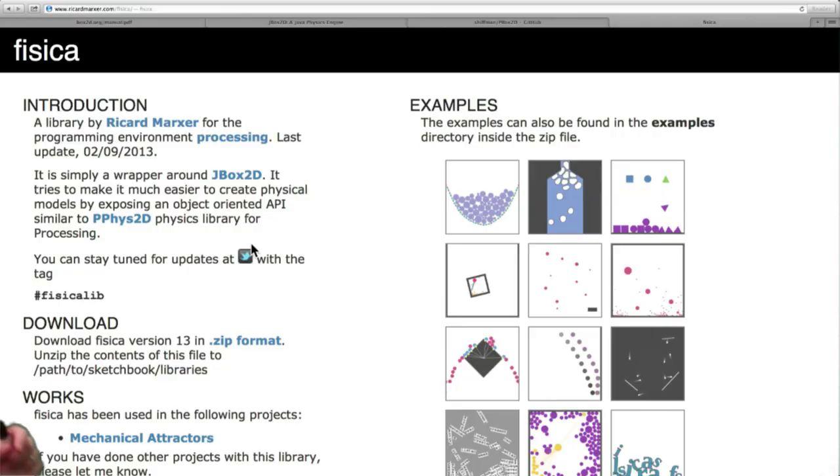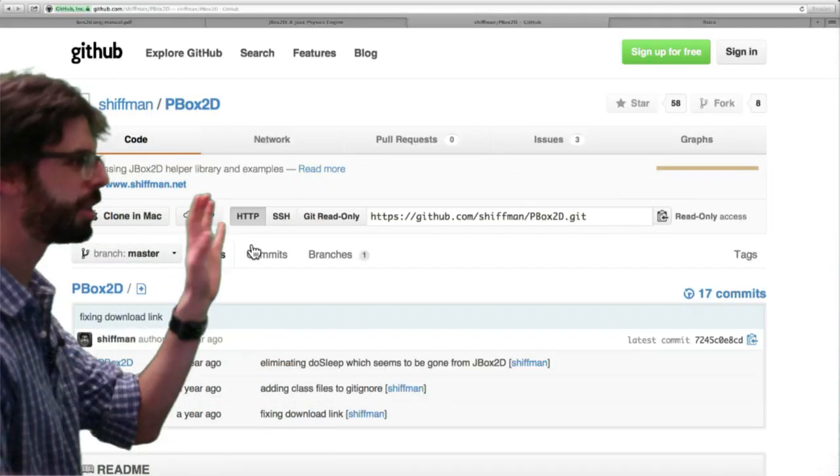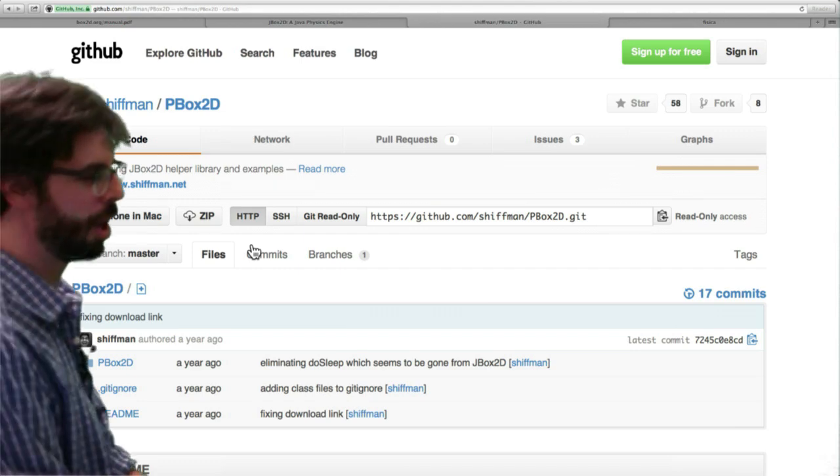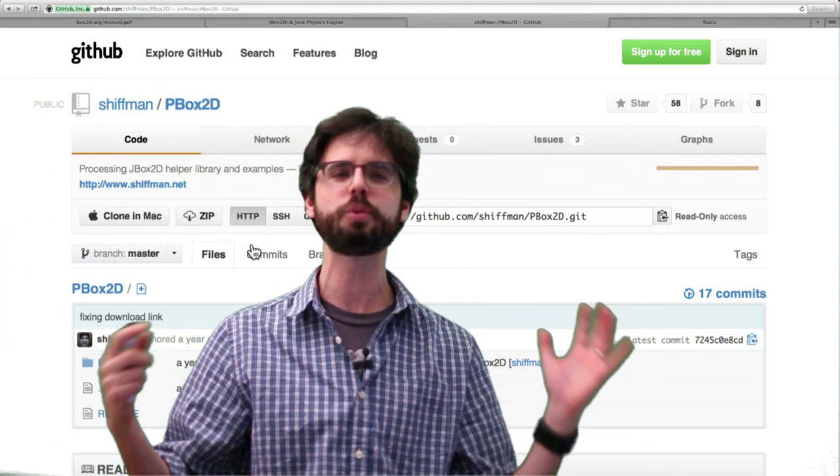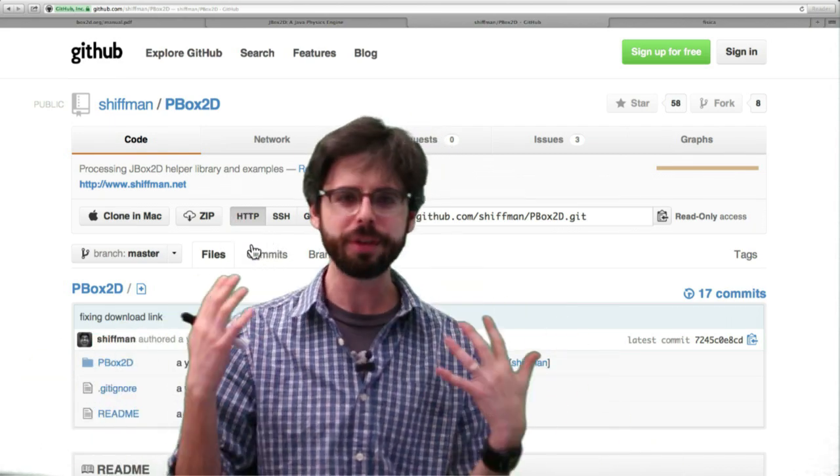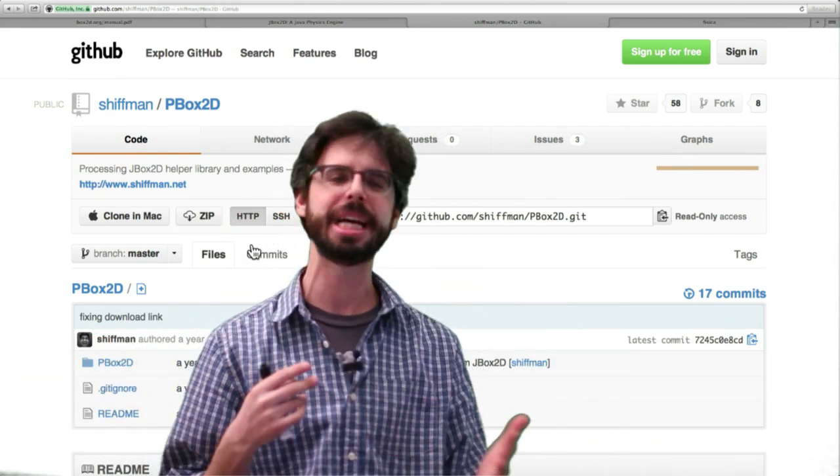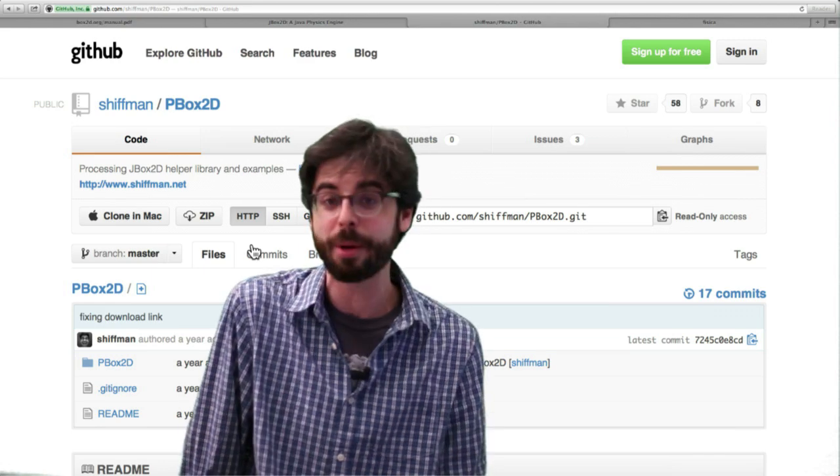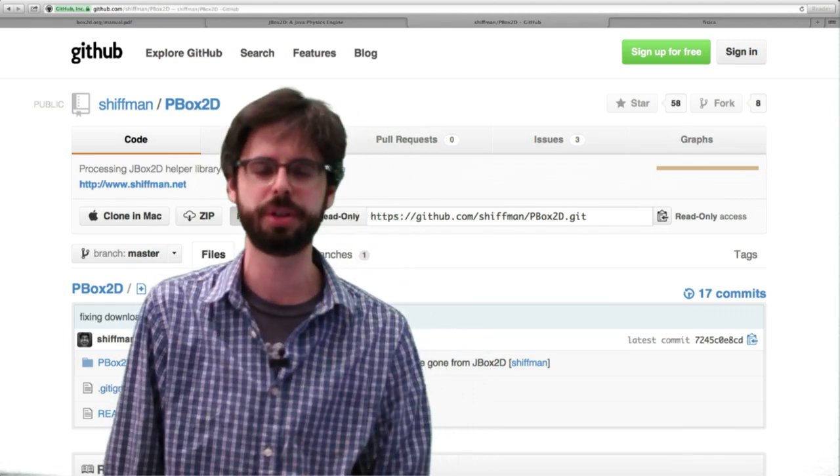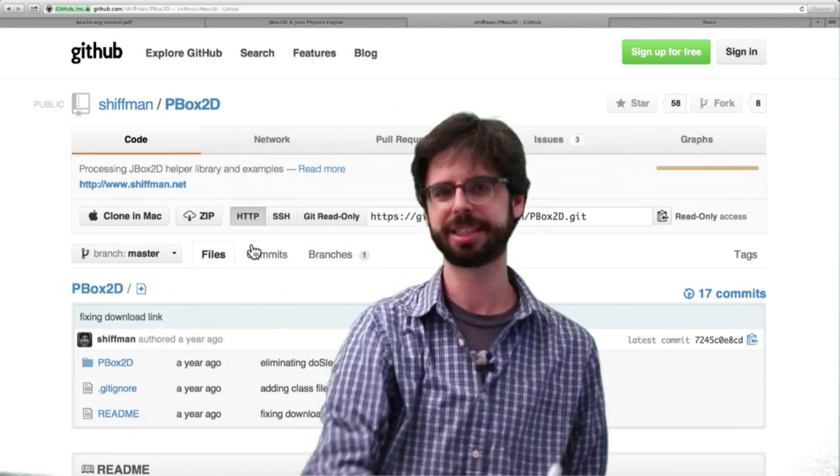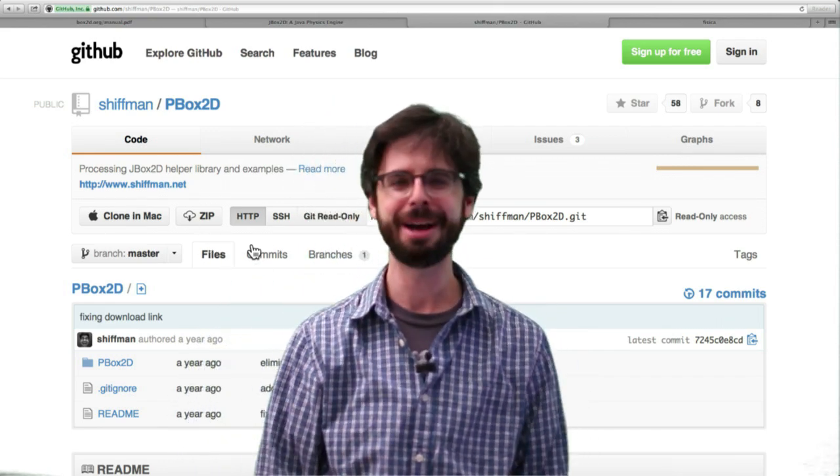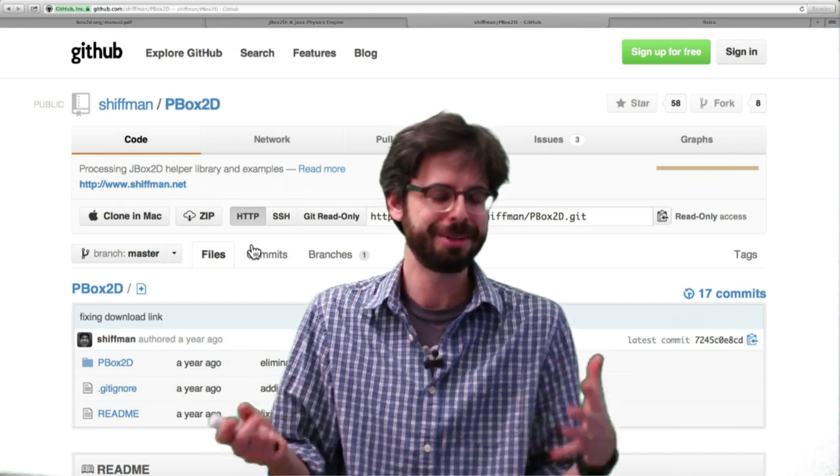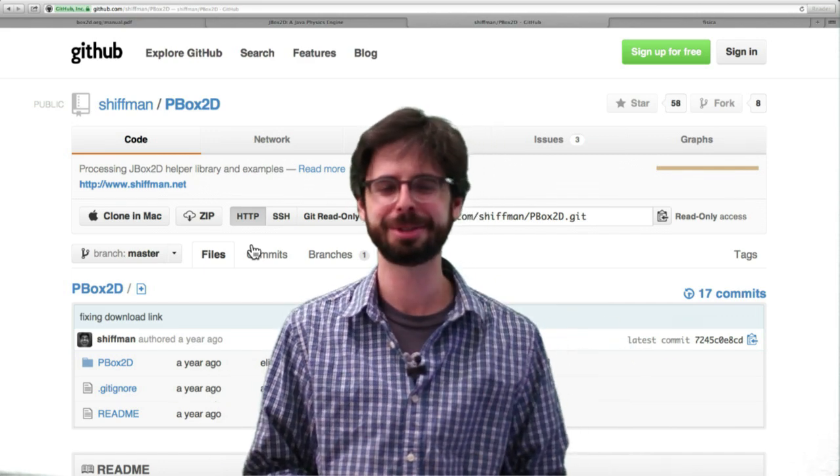So this is what you should do. You should go and you should download this library, pbox2d, use the link below, download it, open it, get it running, go through all the examples and just run them. Take a look at them and sort of just see if it makes sense to you that this is something that you think you might want to use that's going to add value to the stuff that you're making. And if that's the case, then continue and watch the next set of videos. If not, you know, go and have a sandwich or a nice salad or something, relax and do something else.